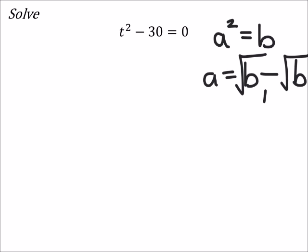Now it doesn't really look like a squared equals b right now, but we can force it to be that if we were just to add 30 on both sides of the equal sign.